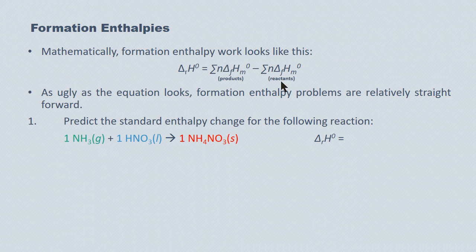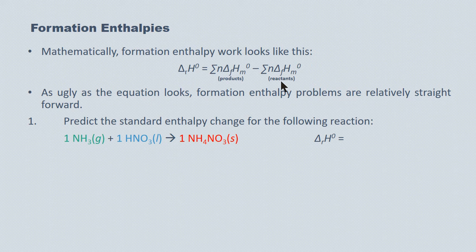Here's an example: predict the standard enthalpy change for the following reaction. On the diploma and unit finals, you always know you're dealing with a formation enthalpy problem because you're not given a change in temperature — which would invite calorimetry — or a system of equations — which would invite Hess's law. Here you're just given an equation. I'm applying color coding to more easily track the applicable enthalpies for each species. In this equation we have one product being formed and two reactants being decomposed.